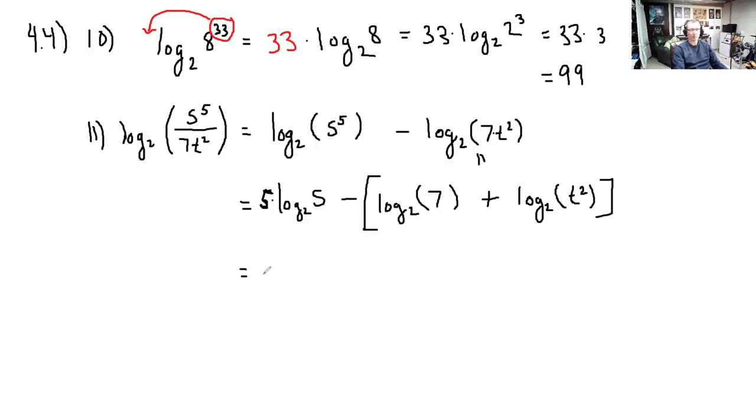Now we're almost done. We're going to distribute the negative sign. So this is minus log base 2 of 7, there's actually nothing to do for this one, and then we have minus log base 2 of t squared. Let's apply the rule where we've got a power that we can bring down. So this is minus 2 times log base 2 of t. That's fully expanded. I see no other products, quotients, or powers of things inside the logarithms.